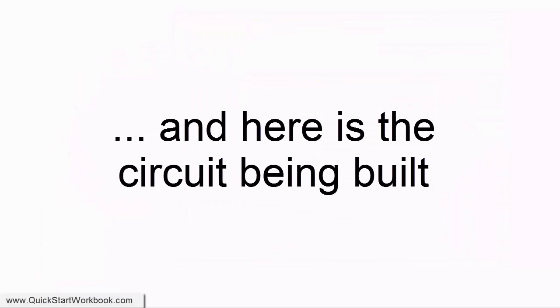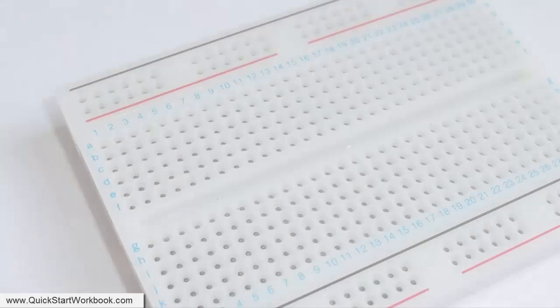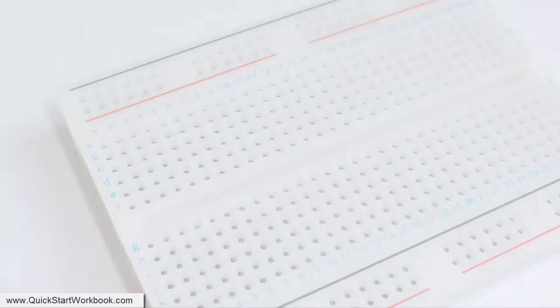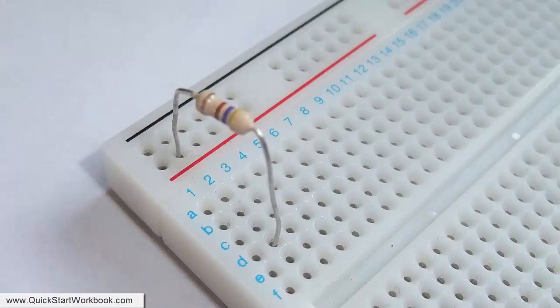And here are a few photographs that show the actual circuit being built. So we start off with an empty breadboard and then the first thing we can do is to add the resistor.